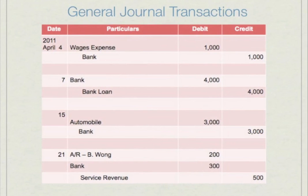The first transaction on this slide, April 4th 2011, shows the business paid wages of $1,000 to employees — debit wages expense, credit bank. The second transaction, on the 7th, shows the business borrowed $4,000 from the bank — debit bank $4,000, credit bank loan $4,000. The third transaction shows the business bought a $3,000 automobile — debit automobile $3,000, credit bank $3,000. The final transaction shows the business sold a service for $500: customer B. Wong paid $300, so we debit bank $300, and will pay $200 later, so we debit accounts receivable $200.